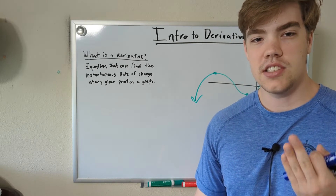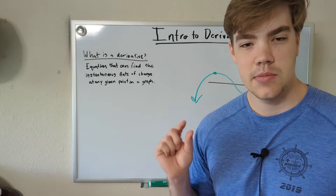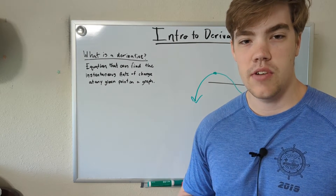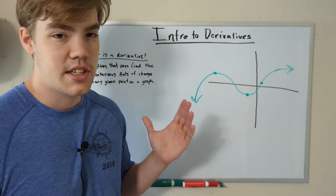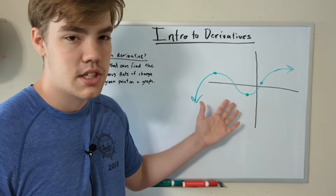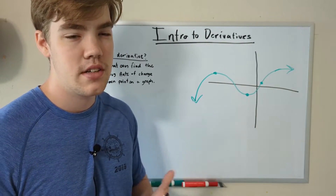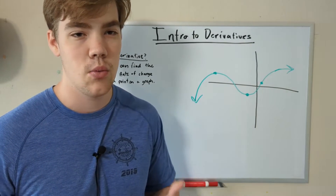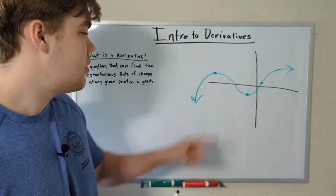This is known as the instantaneous rate of change, and the line that is created at that specific point is known as the tangent line. To help you visualize what a derivative looks like, I'm going to use this graph. This graph doesn't have an equation, but we can use it to figure out what derivatives look like once we solve for them.